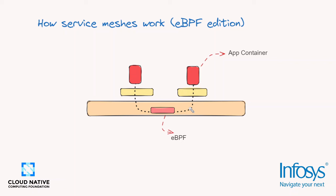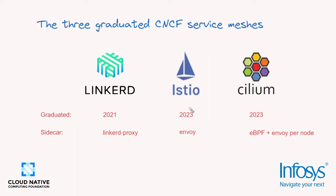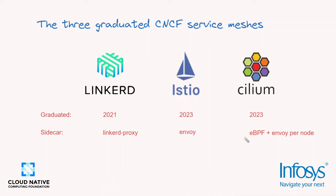This is one of the reasons why, wisely, the Technical Oversight Committee of CNCF does not pick winners — they say they don't pick the king among projects. Instead, they provide a space where all projects can innovate. The three graduated CNCF service meshes are: Linkerd, graduated 2021; and Istio and Cilium, both in 2023. These large, complex projects have taken independent architectural decisions, and there are obvious pros and cons to each.